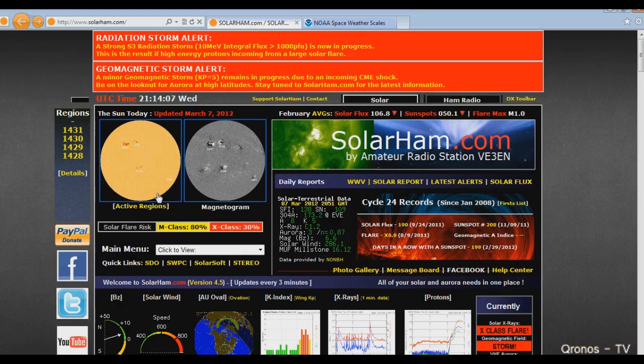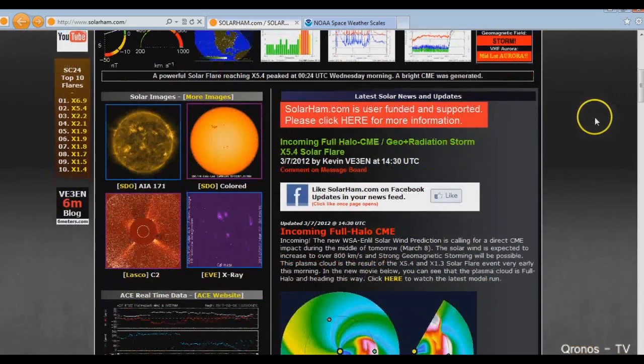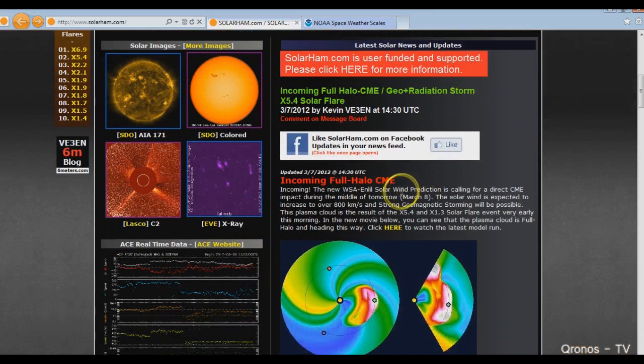Right now we're under radiation storm alert. A strong S3 radiation storm is now in progress. This is the result of high energy protons coming from a large solar flare. We're also under a minor geomagnetic storm with a KP level of 5.